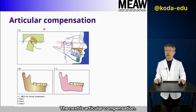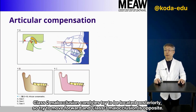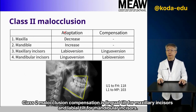The next is articular compensation. Class 2 malocclusion condyles try to be located posteriorly, so they try to move forward; Class 3 malocclusion is opposite. Class 2 malocclusion compensation involves lingual tilt for maxillary incisors and labial tilt for mandibular incisors.